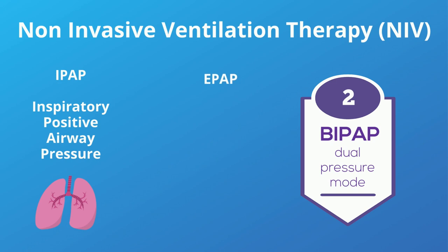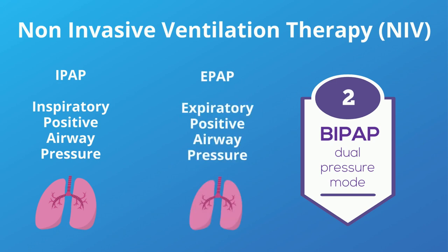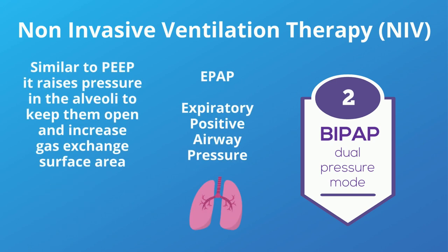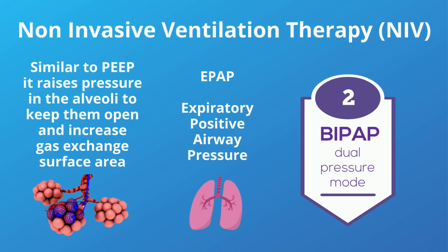EPAP, expiratory positive airway pressure, raises the pressure at the end of expiration. This is effective in improving hypoxia by recruiting and splinting open the alveoli, which increases surface area for gas exchange.